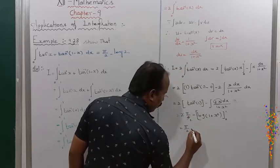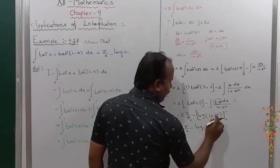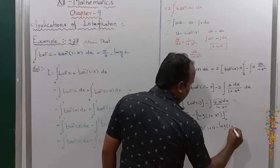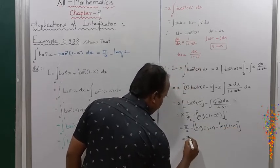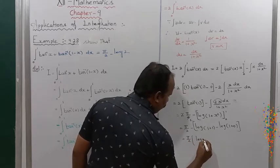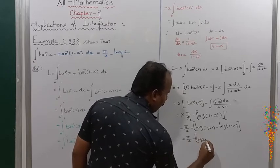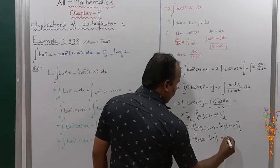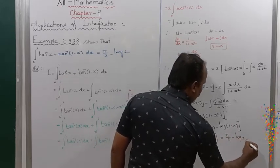So that equals pi by 2, minus half into log of (1 plus x squared) evaluated from 0 to 1. The upper limit gives log of (1 plus 1) equals log 2, and the lower limit gives log of (1 plus 0) equals log 1. Since log 1 equals 0, the second term goes to 0 and only the first term remains. Therefore I equals pi by 2 minus half into log 2.